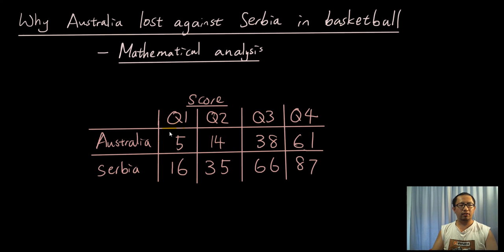So you can see here the score between Australia and Serbia at the end of each quarter. At the end of the first quarter, Serbia was winning 16 to 5, so they were only winning by 11 points. The difference got larger and larger, and it shrunk a little bit in the fourth quarter.